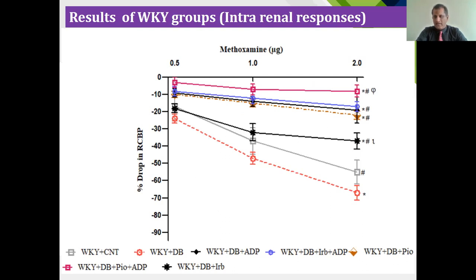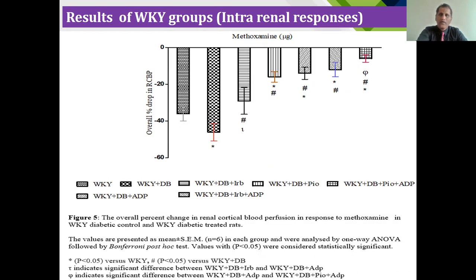Moving to the next alpha-1 adrenergic agonist — methoxamine — we again used three doses: 0.5, 1, and 2 microgram per mL. The combination of pioglitazone with adiponectin showed a further decrease in the percentage drop of renal cortical blood perfusion compared to the other drug combinations. The overall percentage drop again shows that pioglitazone, as a full PPAR-gamma agonist, ensures more decrease in the percentage drop of renal cortical blood perfusion.